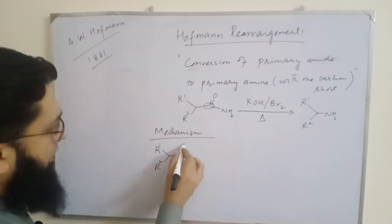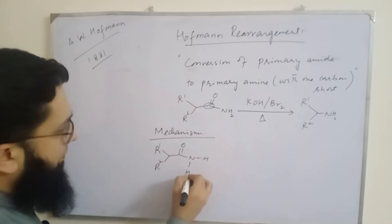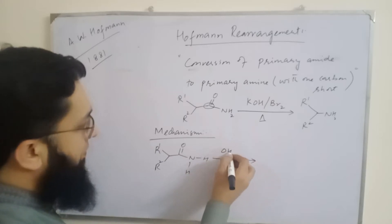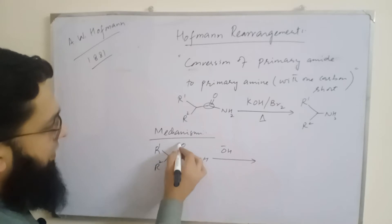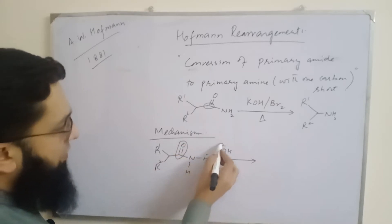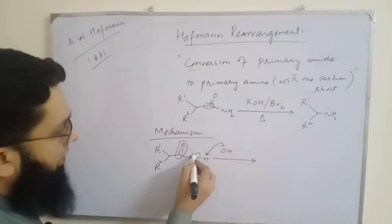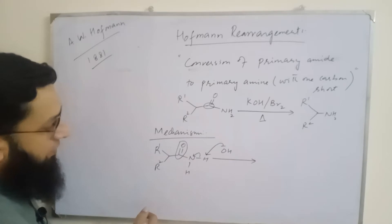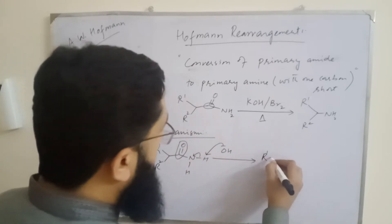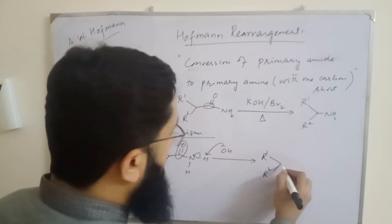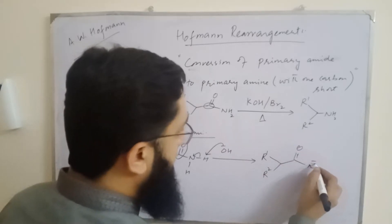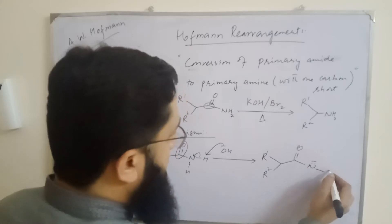This amide is treated with base. The carbonyl group makes these hydrogens acidic, so this proton is abstracted. This bond breaks and converts to a negative charge on nitrogen. As a result, we get this intermediate.